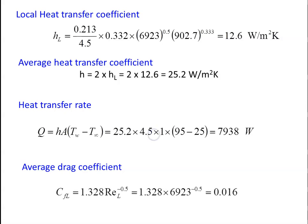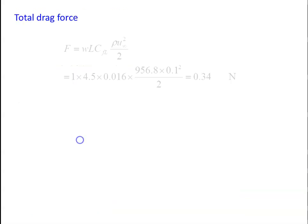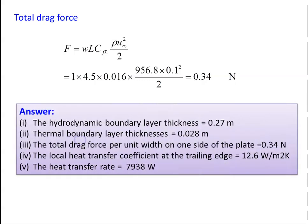Average drag coefficient: CfL = 1.328 × Re⁻⁰·⁵ = 1.328 × (6923)⁻⁰·⁵ = 0.016. Total drag force = A × CfL × ρ·U∞²/2 = (1 × 4.5) × 0.016 × 956.8 × (0.1)² / 2 = 0.34 N. Answers: δH = 0.27 m, δT = 0.028 m, drag force = 0.34 N, local h = 12.6 W/m²·K, heat transfer rate = 7938 W.